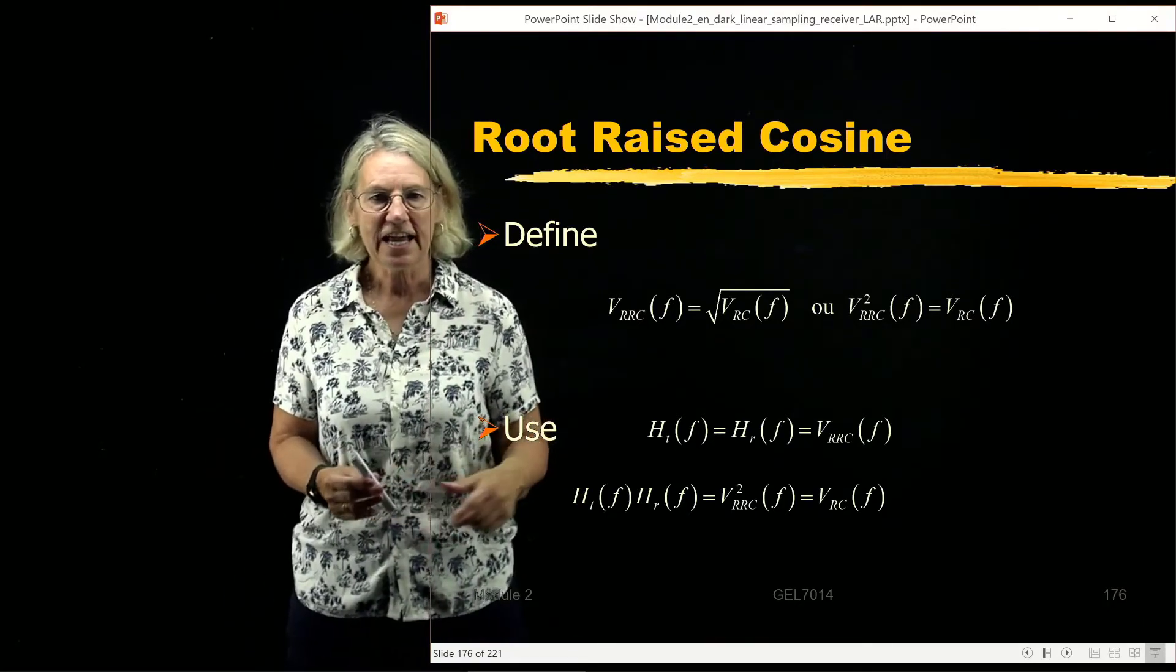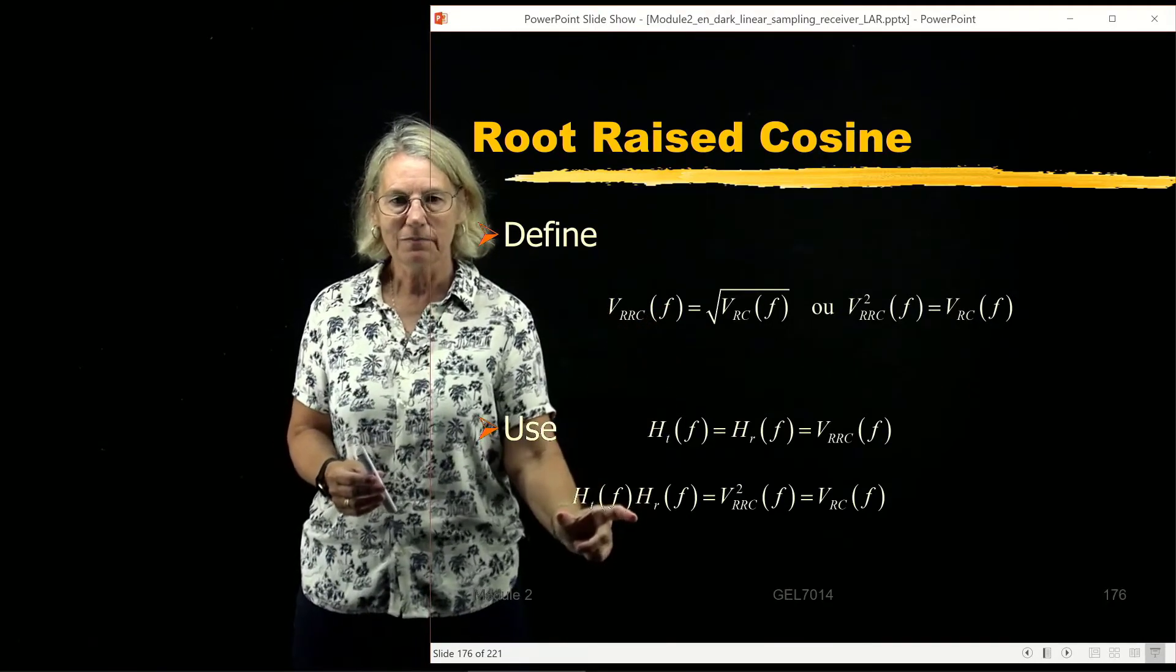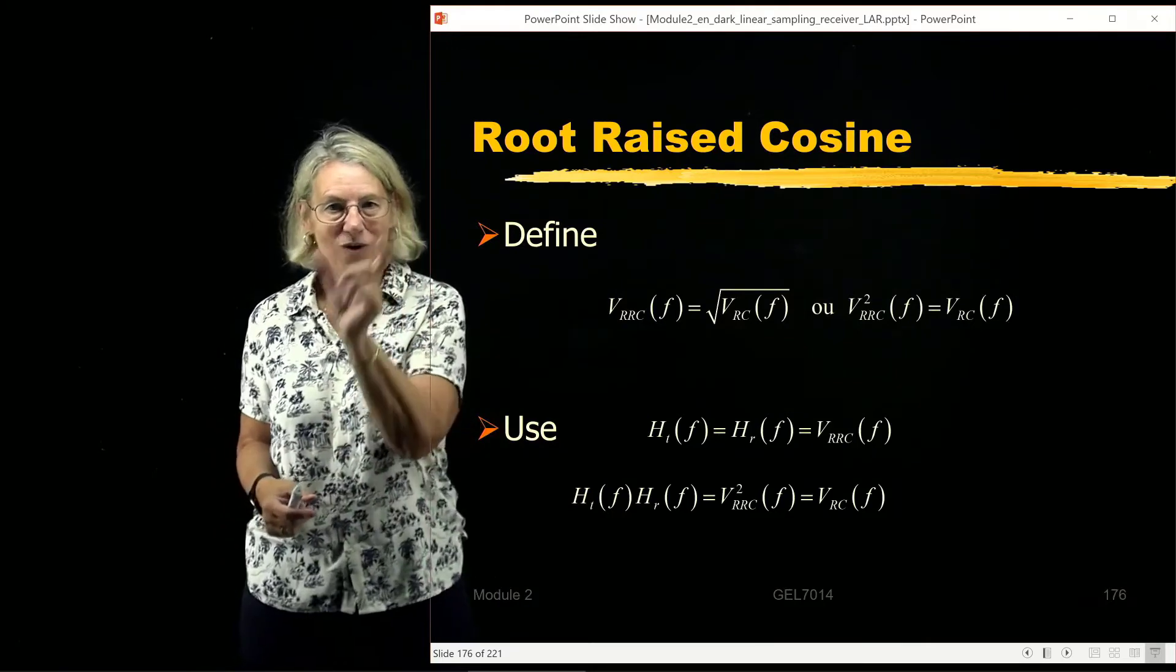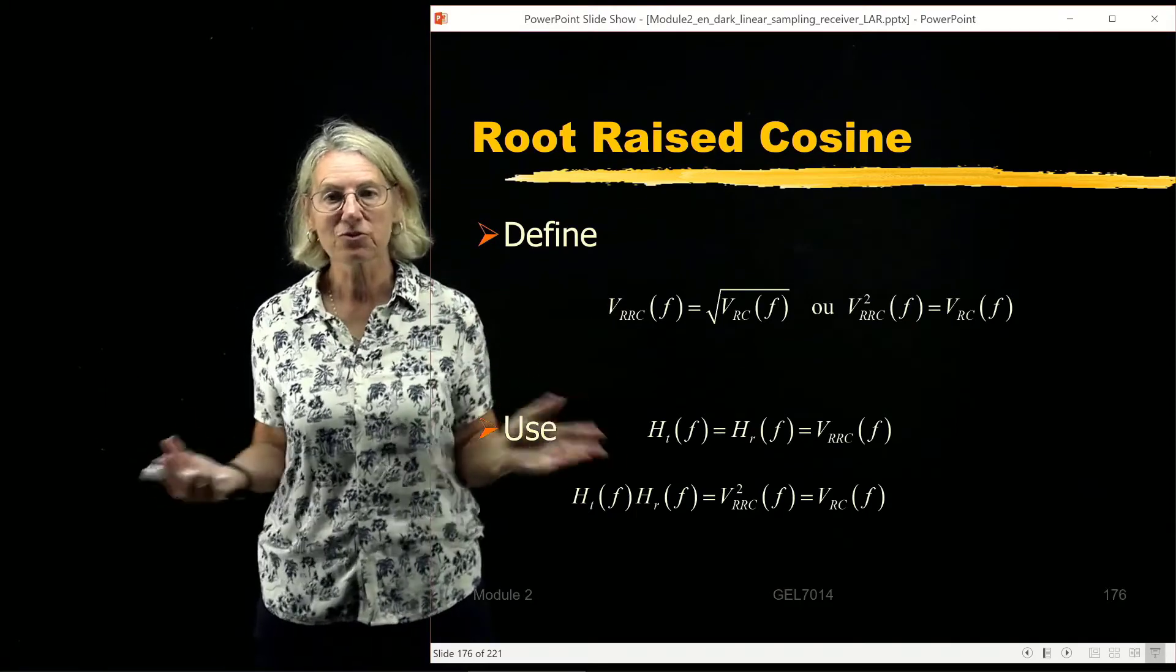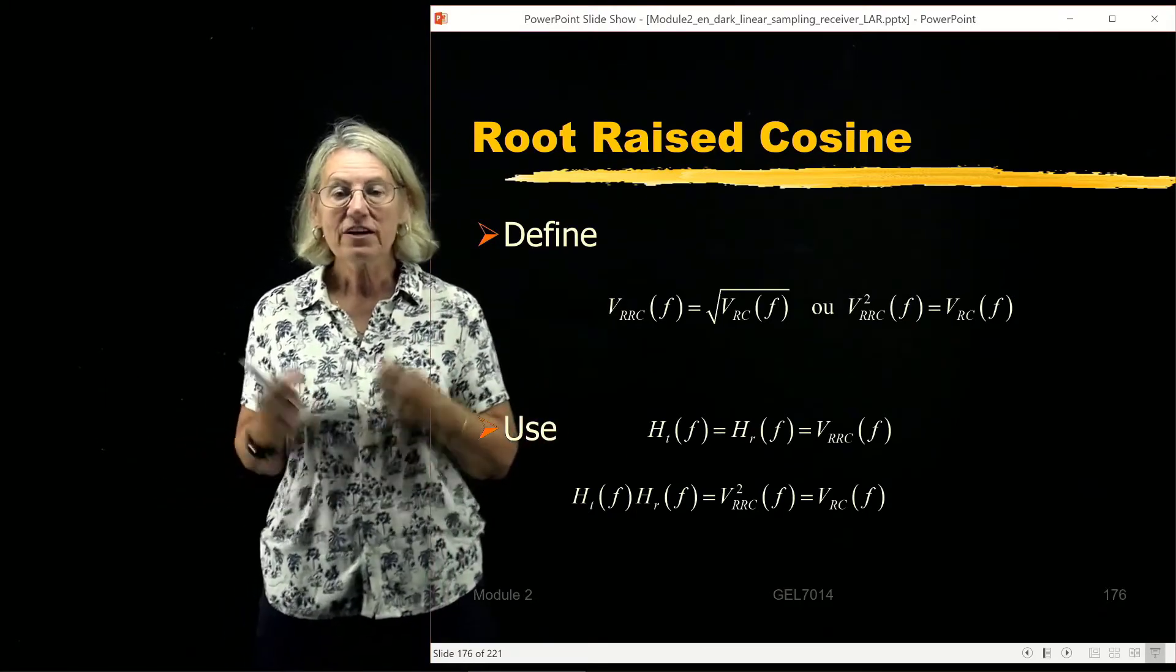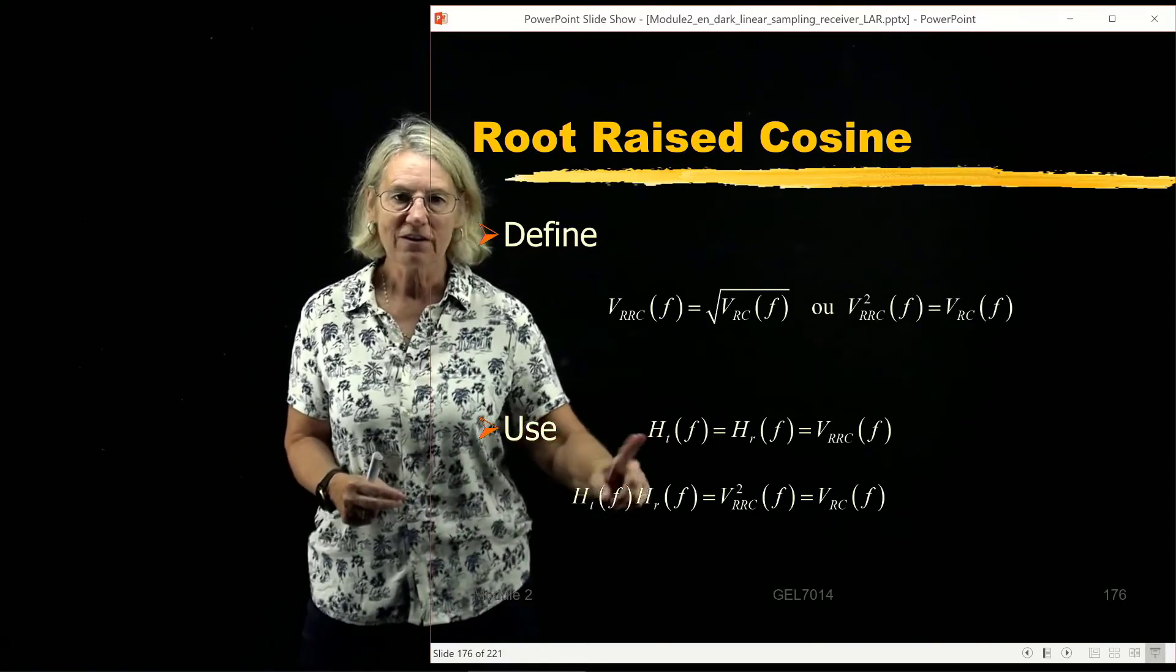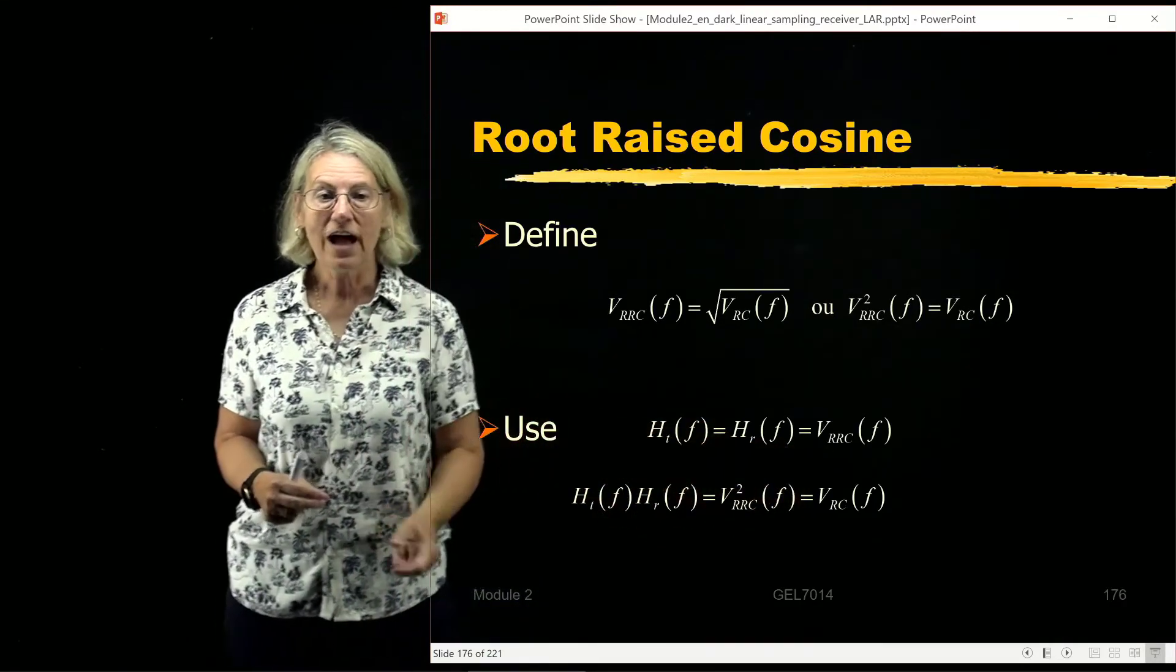So what's interesting about that is if I take two root raised cosine filters, suppose I were having one after another, the combined one would have a frequency response which is the raised cosine response. So therefore, if I was using a matched filter at the transmitter, I would use a root raised cosine, and at the receiver I would use another root raised cosine.